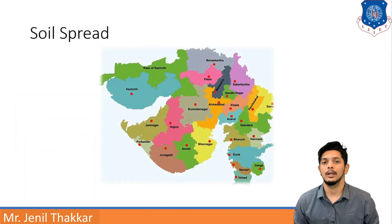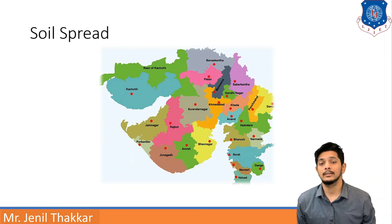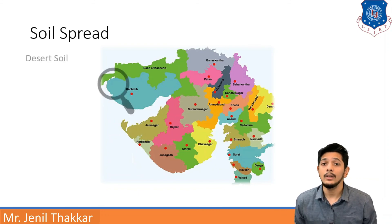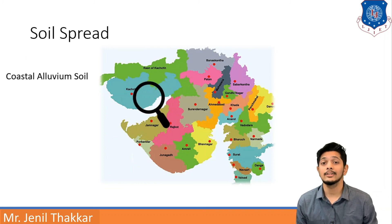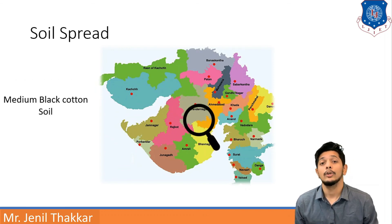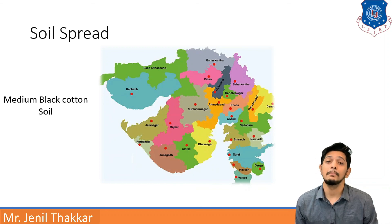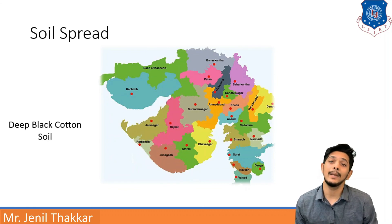Let us look at soil spread in Gujarat. In the north Kutch region there is desert soil; in the southern Kutch region there is coastal alluvium soil. In the north and east part of Saurashtra there is medium black cotton soil, and in the south-west part of Saurashtra there is deep black cotton soil.